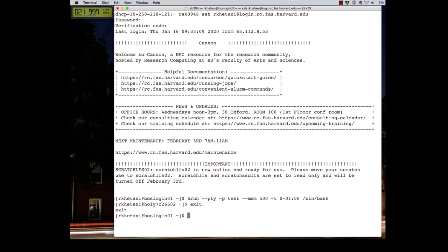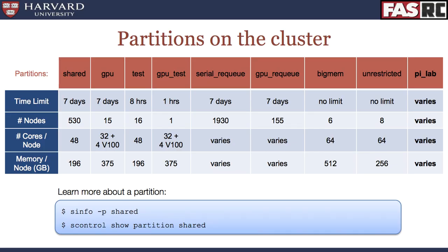To exit the interactive job, you can use the exit command. This will bring you back to the login node. The exit command will also close your connection to the cluster. Regarding partitions available on the cluster: each column in the table represents a different partition. The first row tells you how long you can run a process on that partition. The second, third, and fourth rows tell you the total number of nodes, cores per node, and memory per node that you can request. You can use the sinfo or scontrol commands to obtain more information about specific partitions. We will be talking more about partitions in a different video.